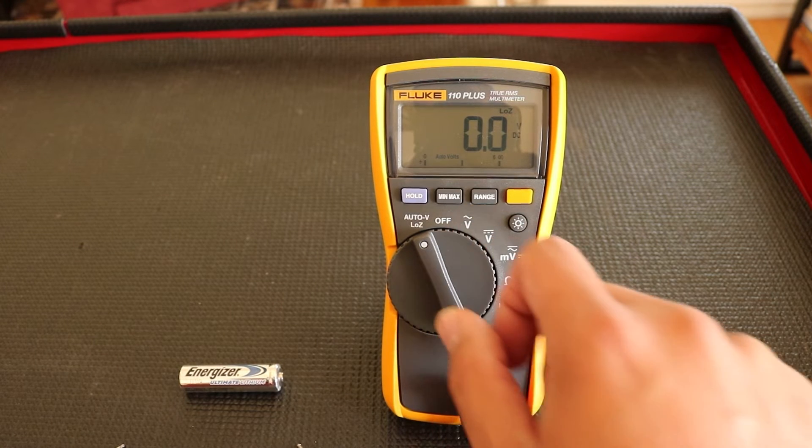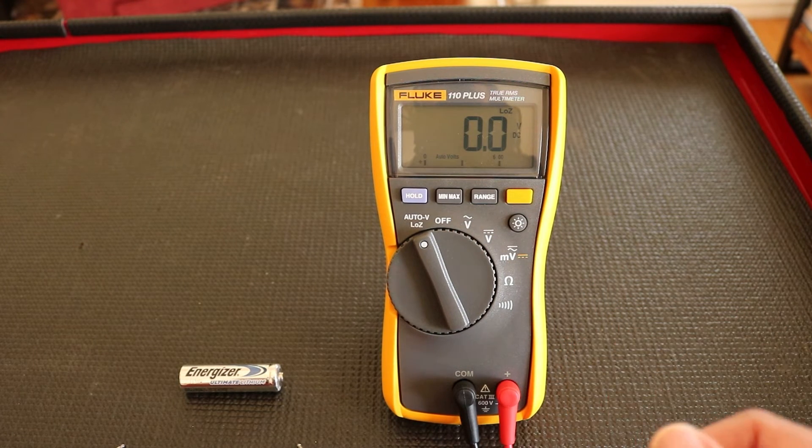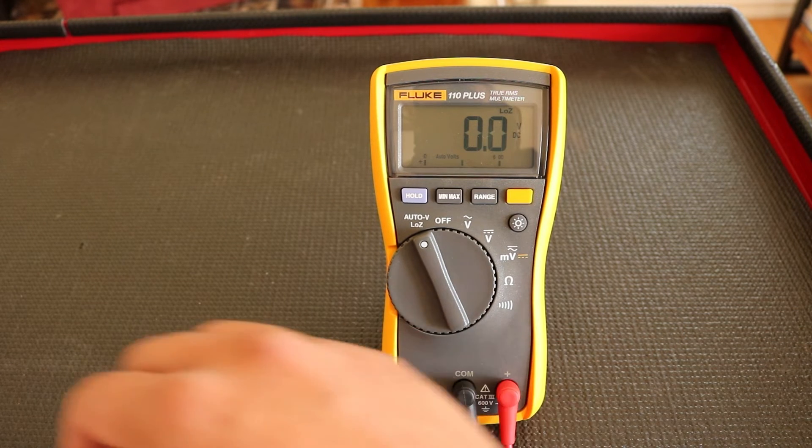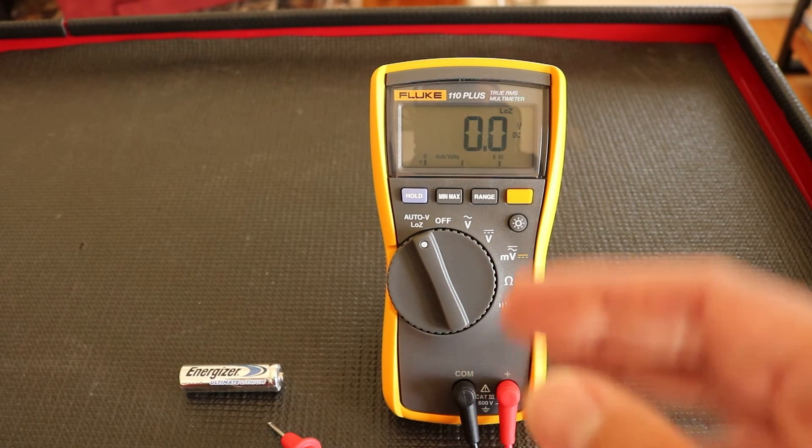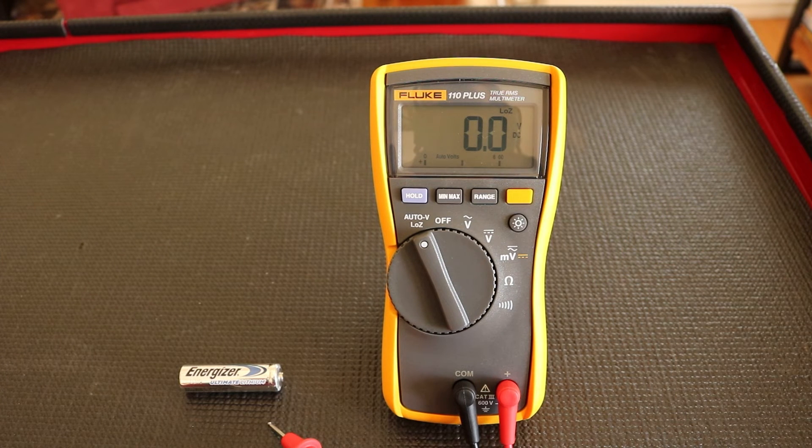What this does, it allows the meter to select a DC or AC voltage measurement based on the input applied between the positive and the comm jacks. Essentially, it's going to auto detect if you're testing something that is either AC or DC within the meter's volt range, and it will auto select which one it is for you.